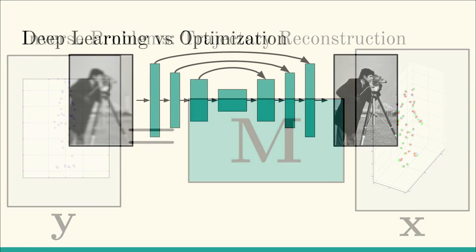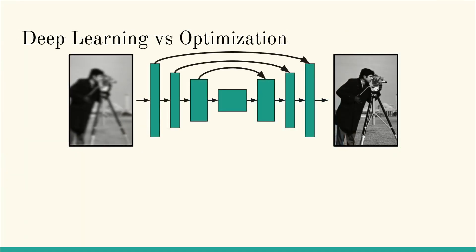While many problems of this form are now solved through deep learning, earlier work made use of optimization frameworks such as sparse coding.